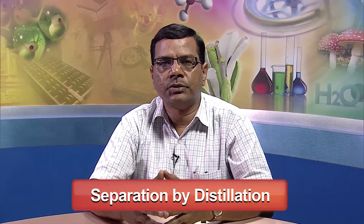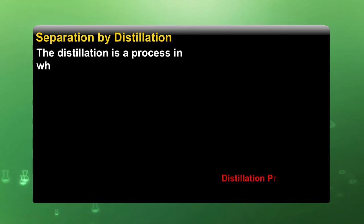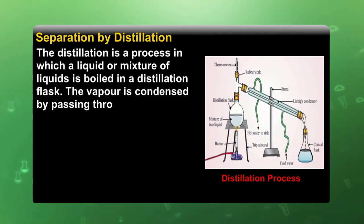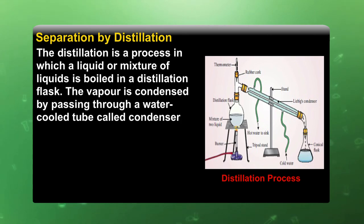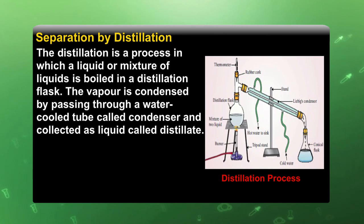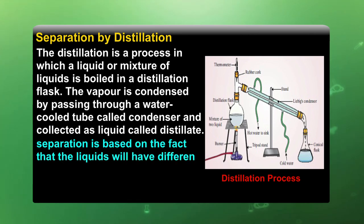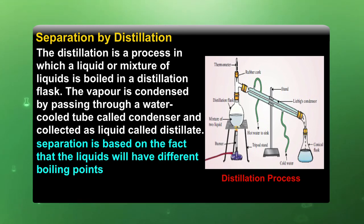Separation by distillation: this is the most advanced technical method used to separate two components. Distillation is a process in which a liquid or mixture of liquids is boiled in a distillation flask. The vapor is condensed by passing through a water-cooled tube called a condenser and collected as a liquid called the distillate. The main principle is that if two miscible liquids have different boiling points, distillation can be used to separate them.